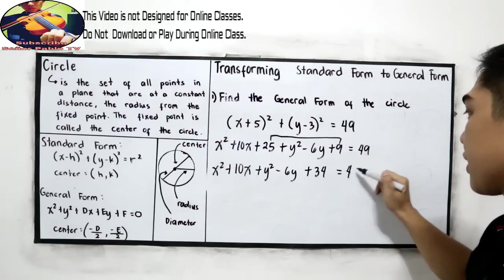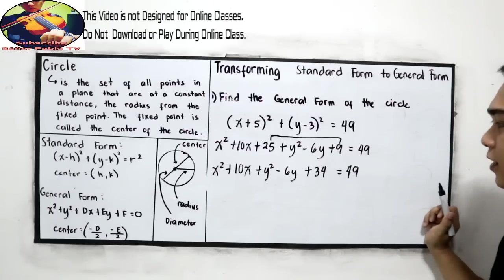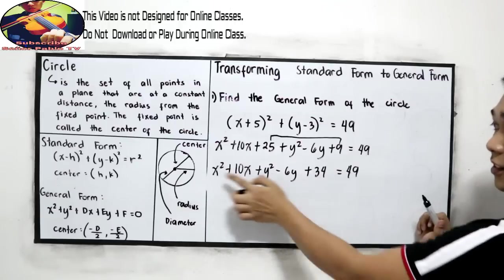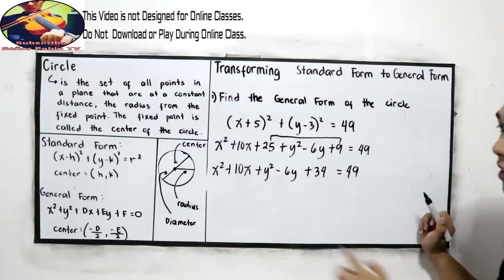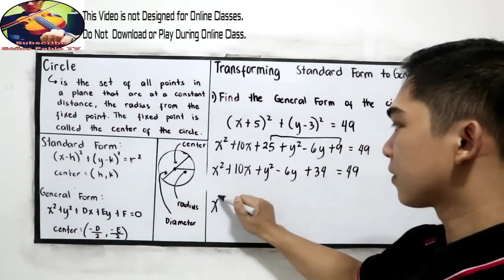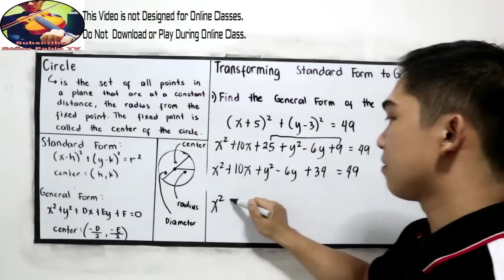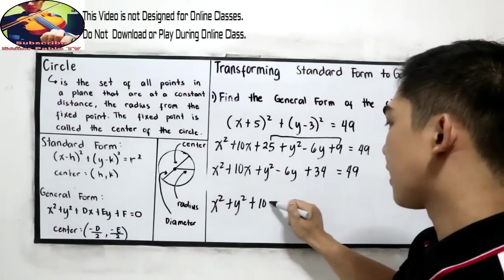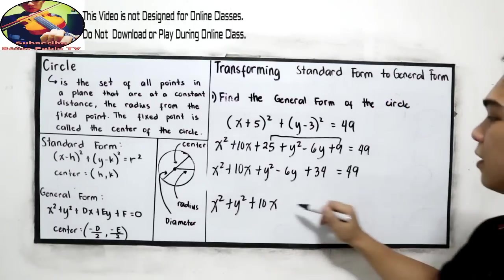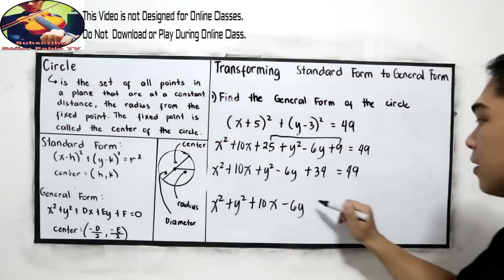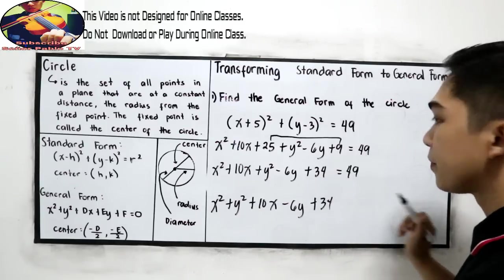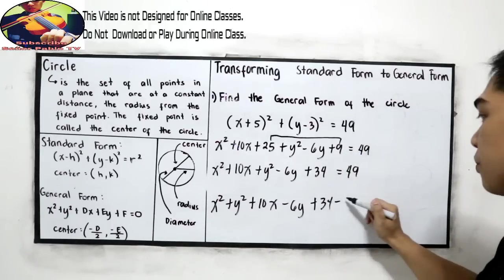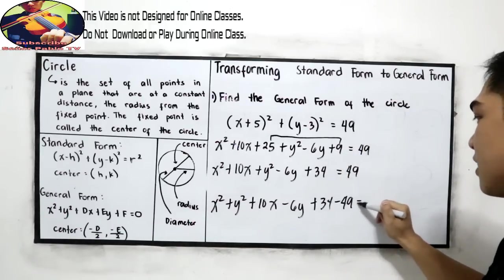Now let us rearrange our equation. So: x squared, copy positive y squared, plus 10x, minus 6y, plus 34. In our general form, that is equated to 0, so we need to subtract 49, giving us equal to 0.